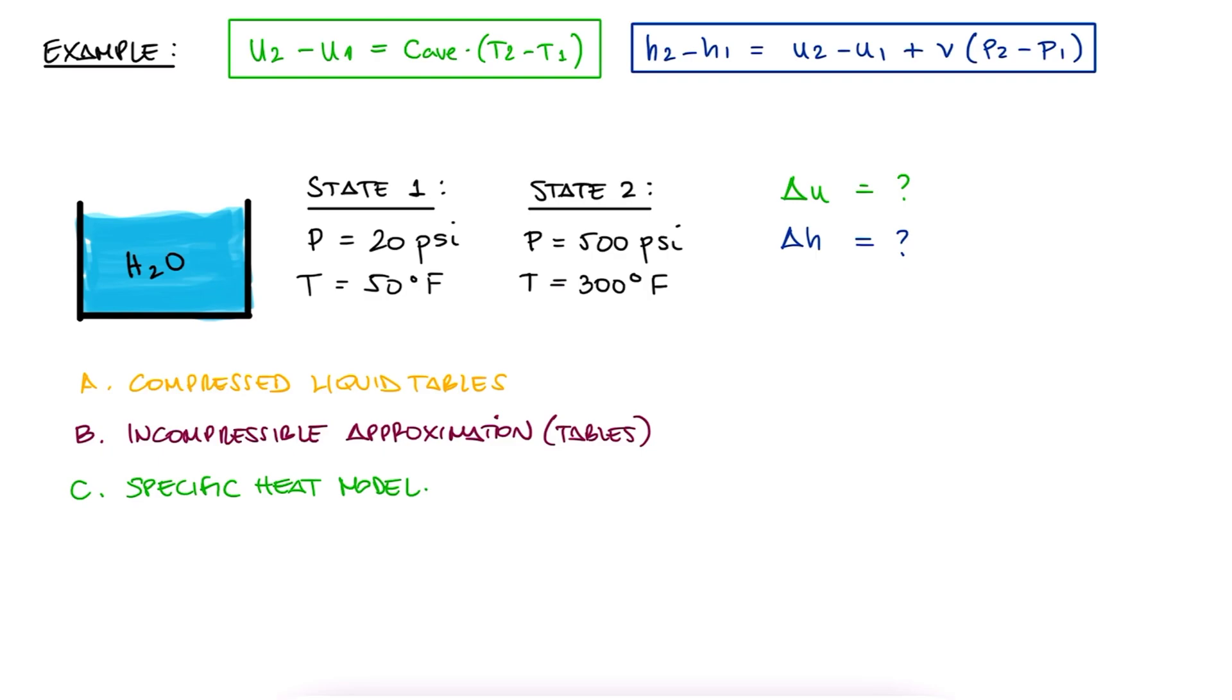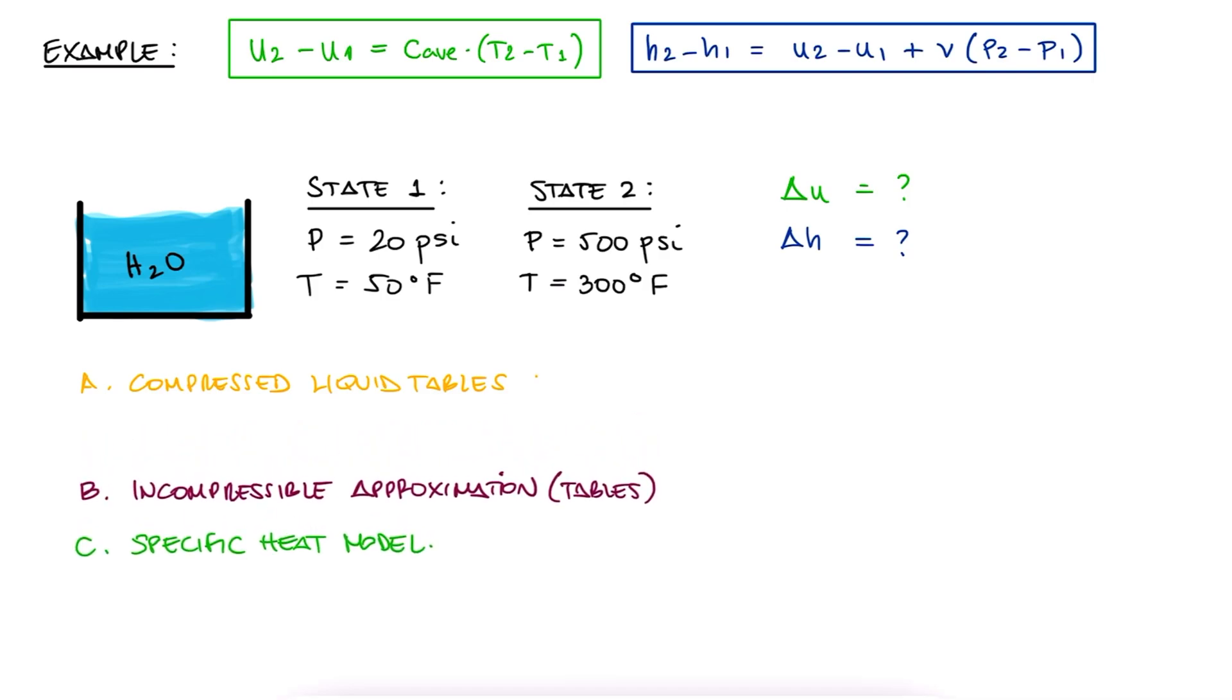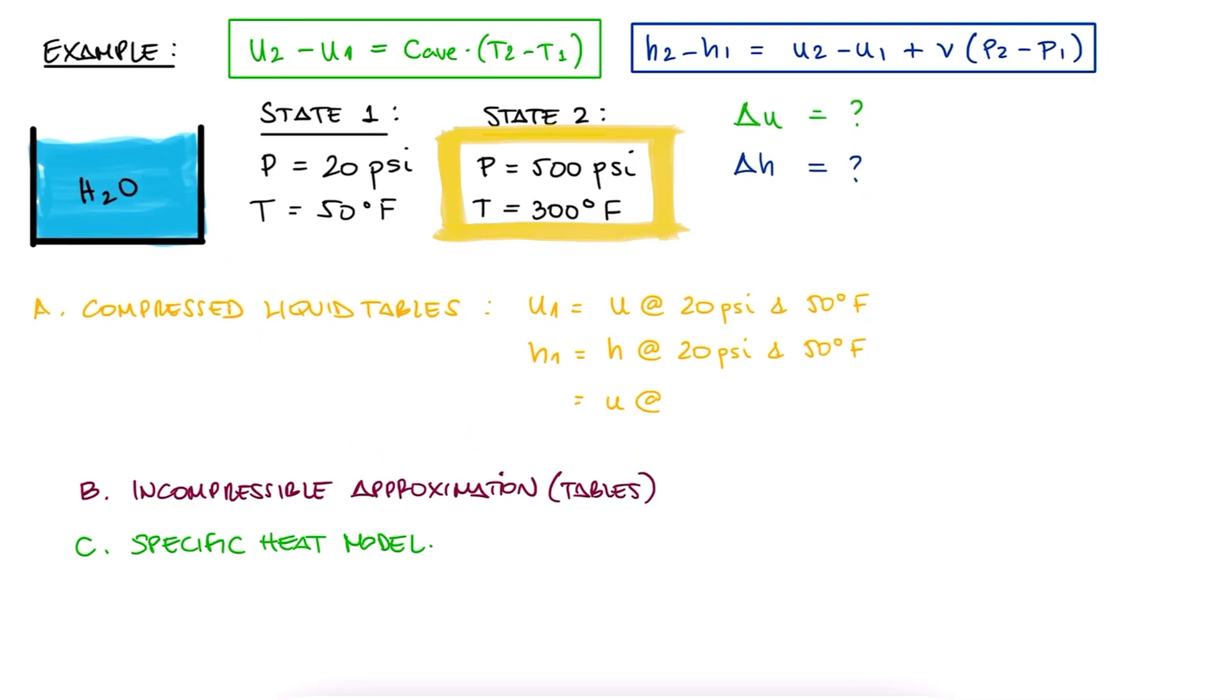Let's quickly state the steps for each of these three methods. If we're to use the compressed liquid tables, we would have to find the specific internal energy and enthalpy for 20 psi and 50 degrees Fahrenheit and label them u1 and h1, and then u and h for 500 psi and 300 degrees Fahrenheit and label them u2 and h2. The changes would therefore be u2 minus u1 and h2 minus h1.